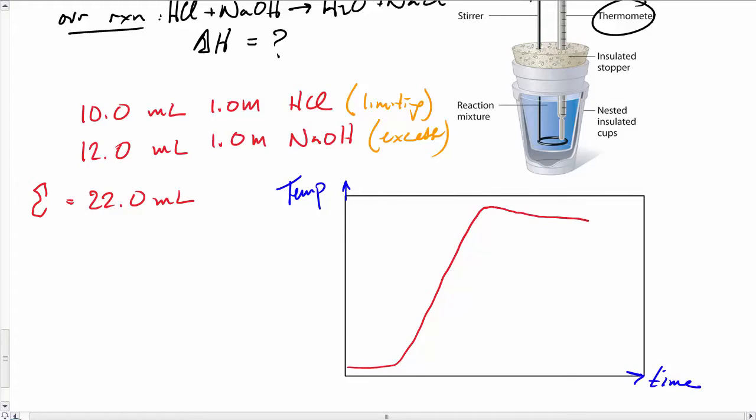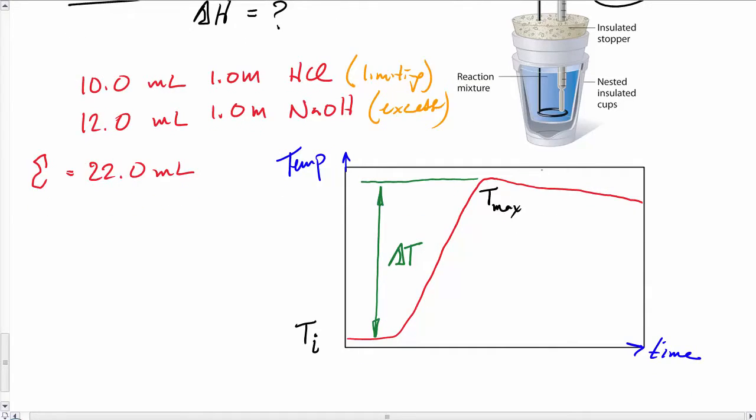You'll get a temperature graph like this, and you'll see the increase in temperature due to the reaction. Here we have the initial temperature, there the final temperature, and you can see on the right-hand side the temperature declines gradually afterwards. Our calorimeter isn't perfect. Let's see what this looks like in lab.